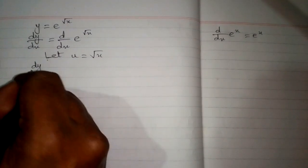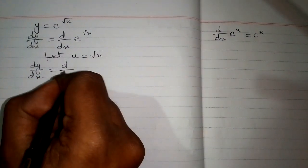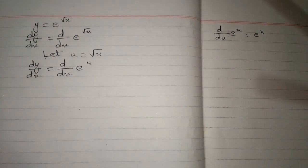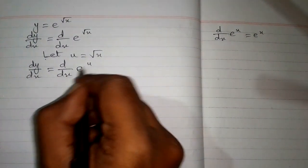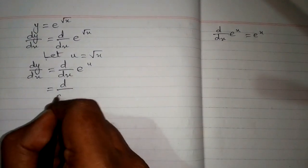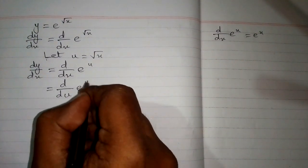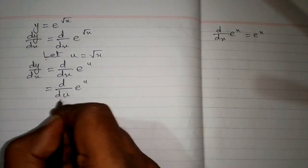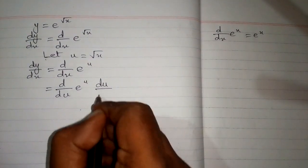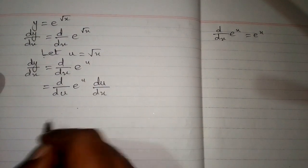So dy/dx = d/dx of e to the power u. Again we don't have the same variable, so we write du in place of dx and multiply by du/dx to balance. This is the chain rule of differentiation.